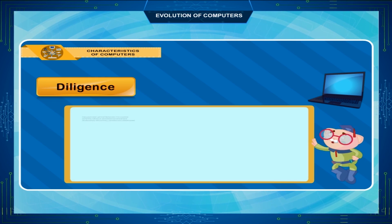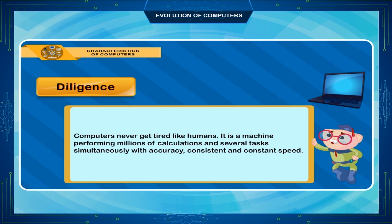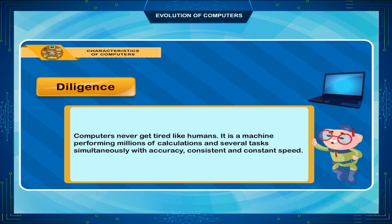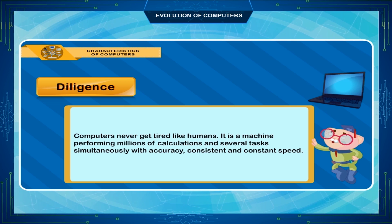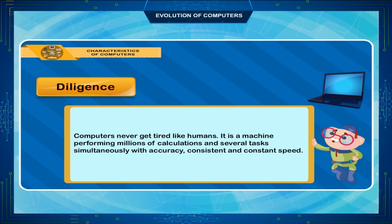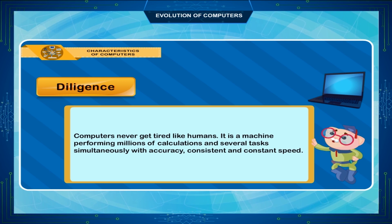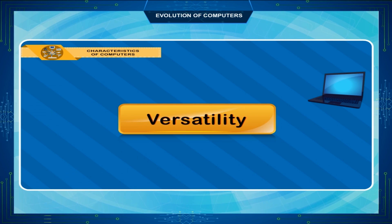Diligence: Computers never get tired like humans. It is a machine capable of performing millions of calculations and several tasks simultaneously with accuracy, consistent and constant speed.